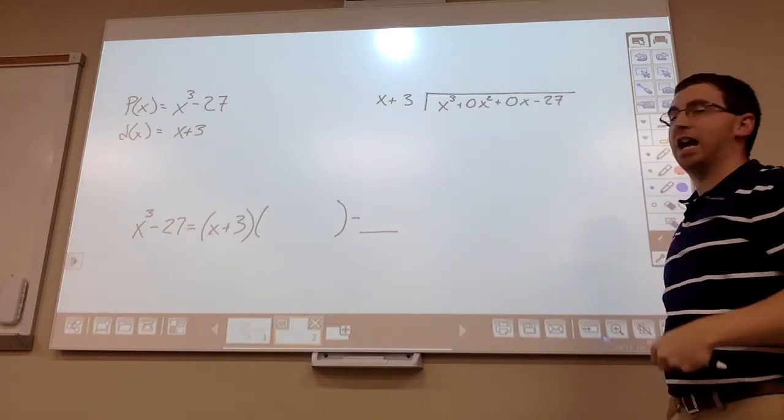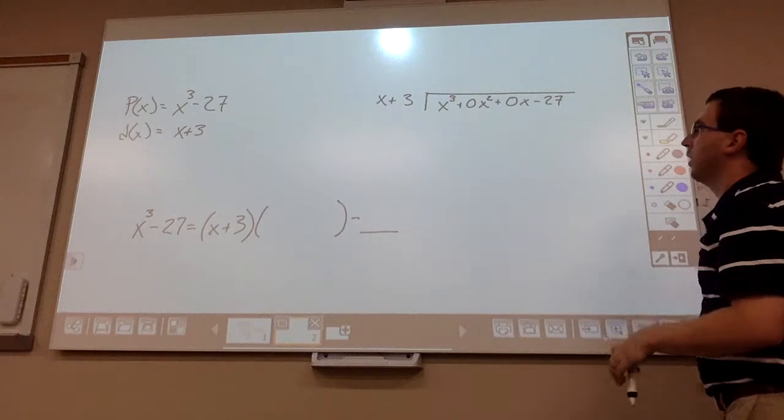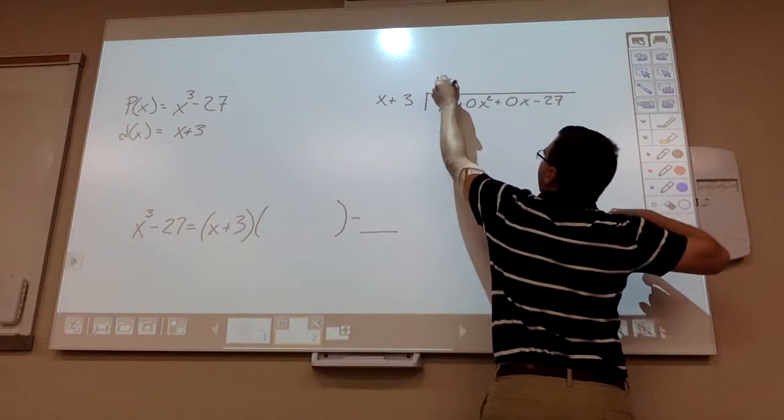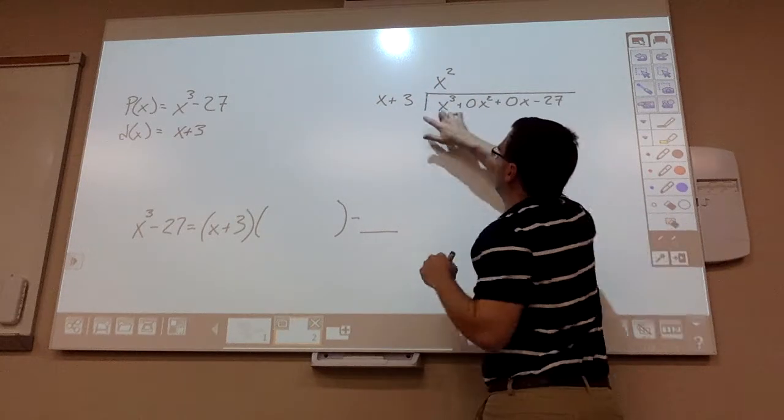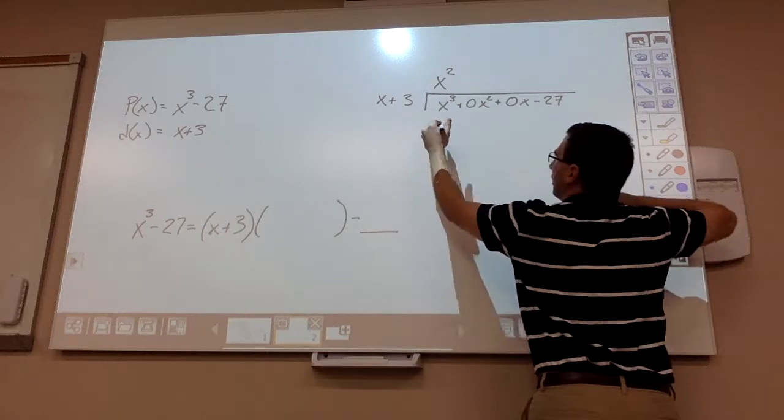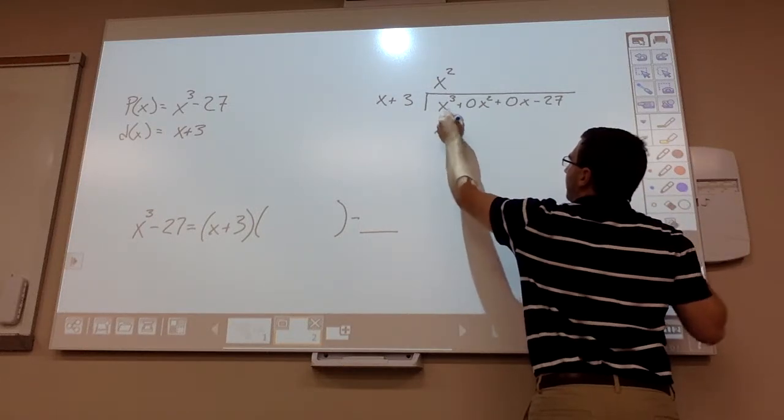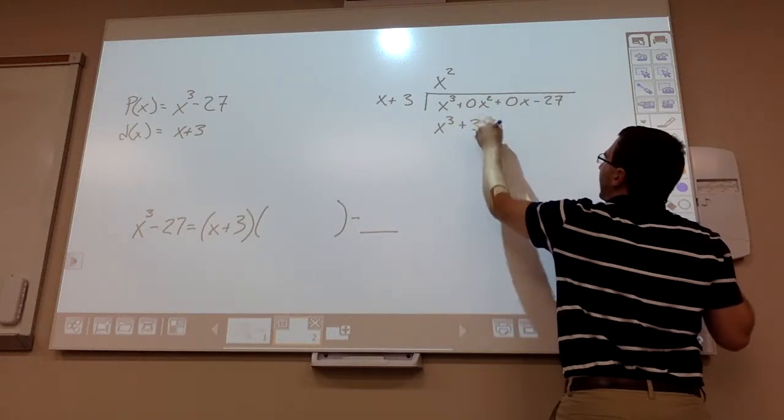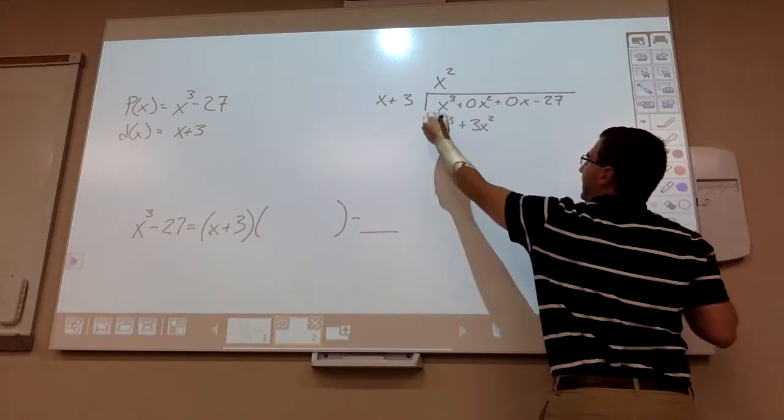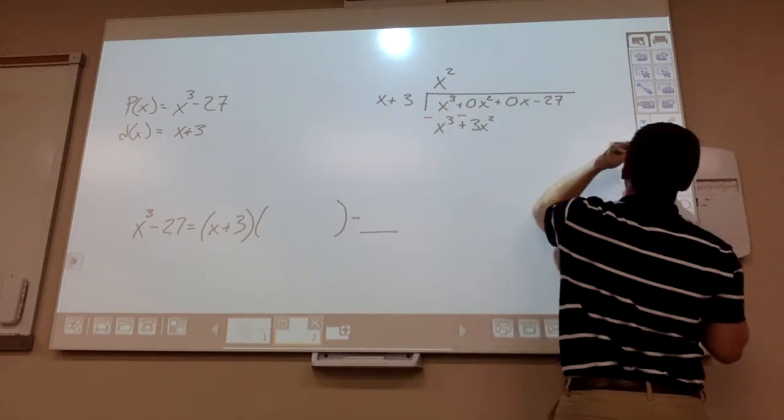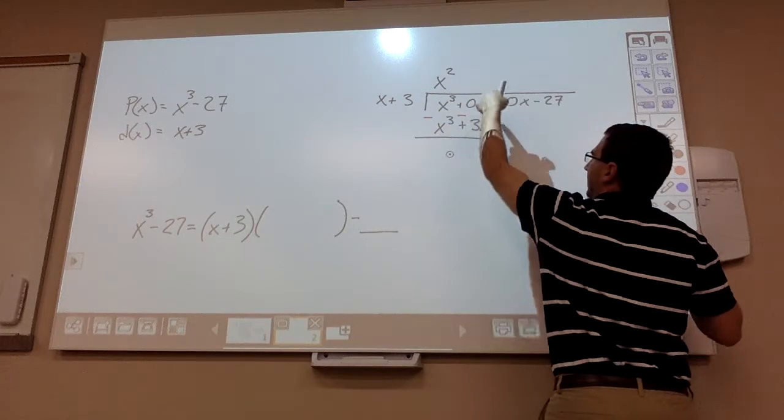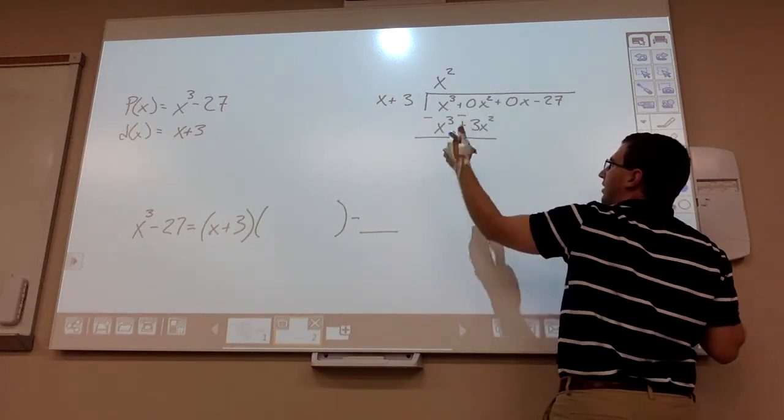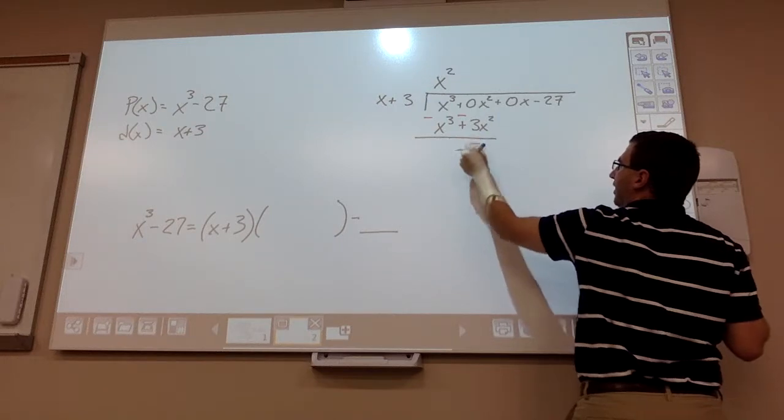And now we do the long division just like we did before. What times x gets me x³? Well, that would be x². So x² times x, well that gets me an x³. And then these two guys multiply together, positive 3x². Yet again, change your signs. And then combine like terms. Well, the x³ - x³ goes away. 0 - 3, well that gets you -3x².